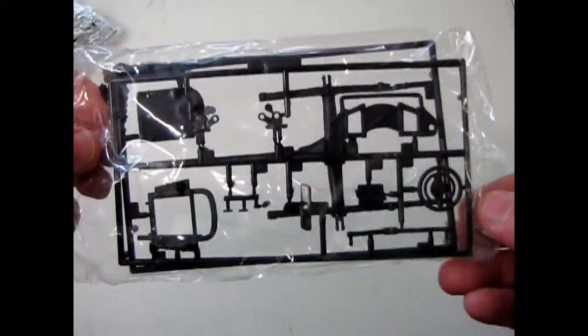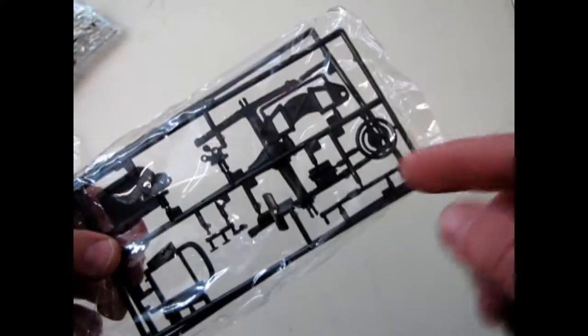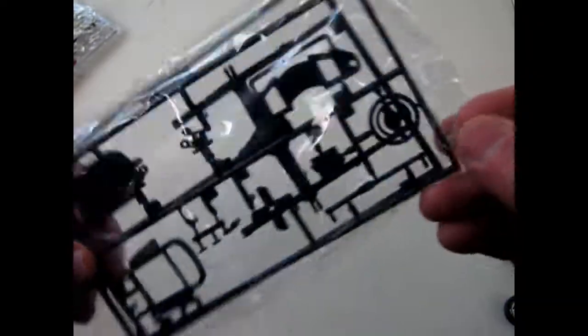These are the frame and undercarriage pieces as well as the steering wheel. All painted in black or possibly molded in black.